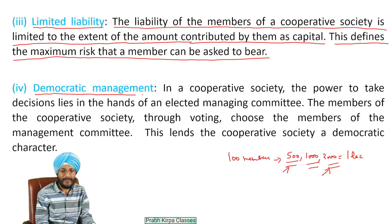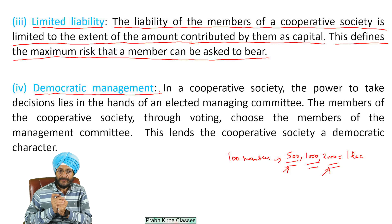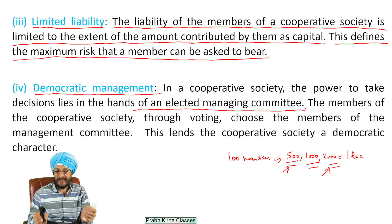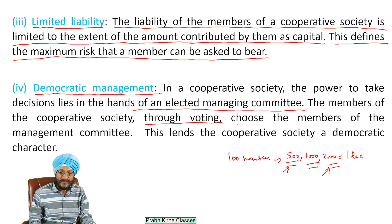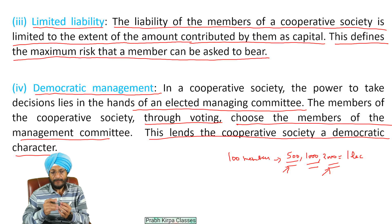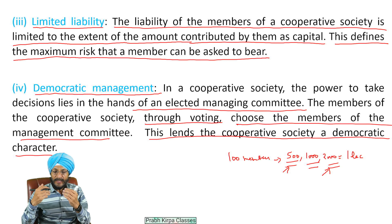The next feature of cooperative society is democratic management. In a cooperative society, the power to take decisions lies in the hands of an elected management committee, which is elected by the members through voting. Each member of the cooperative society has one vote, and they choose the members of the management committee. This lends the cooperative society a democratic character, as the management committee is elected through a democratic process.